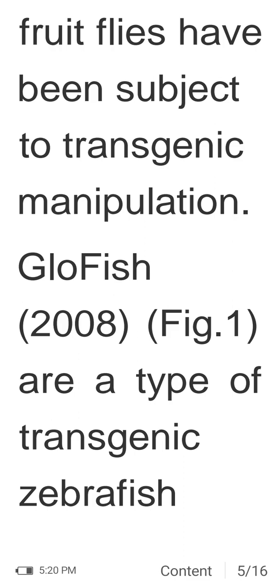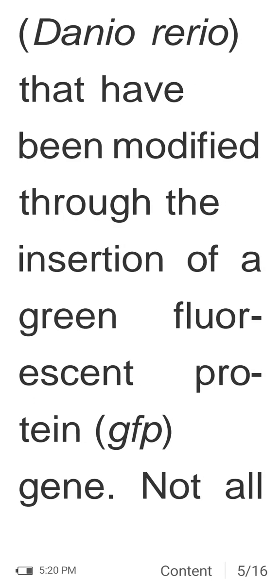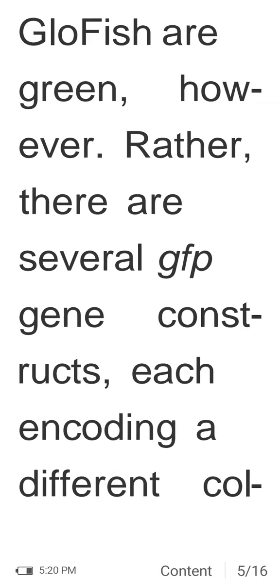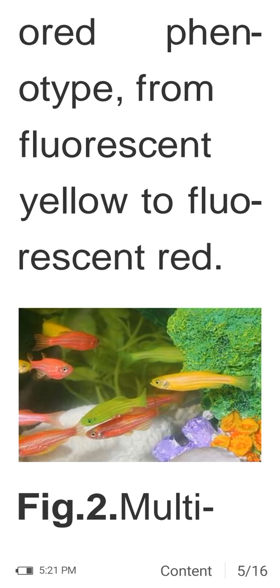GloFish are a type of transgenic zebrafish (Danio rerio) that have been modified through the insertion of a green fluorescent protein (GFP) gene. Not all GloFish are green — there are several GFP gene constructs, each encoding a different colored phenotype, from fluorescent yellow to fluorescent red.